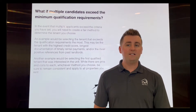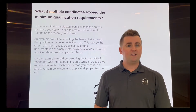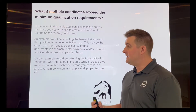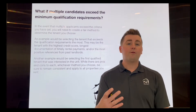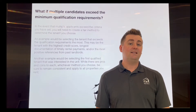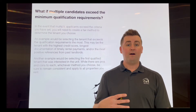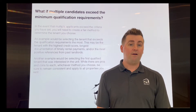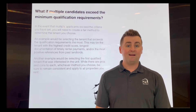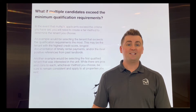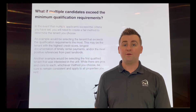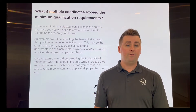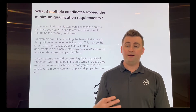There are two ways to handle it. The first is going through the applications and selecting the tenant who has the longest proof of payment history, the highest credit score, and the highest income verification — selecting the best. You should explain to the other tenants that you selected this tenant because they had the longest proof of payment history and highest credit score, as these are good things to disclose to show you're being fair and consistent.